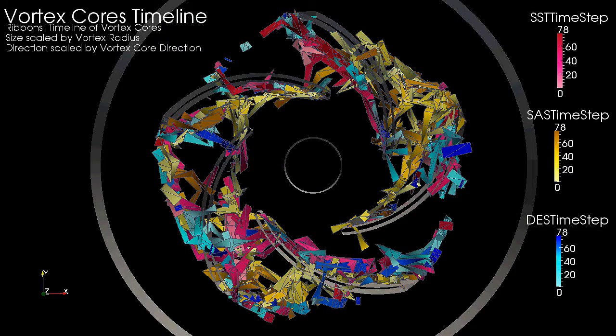Now, we add the ribbons from the SAS simulation colored in light yellow to dark yellow. Overall, the three simulations cover predominantly similar regions.